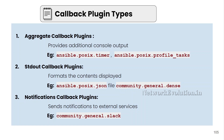Aggregate provides additional console output. If you want to get the total time taken by the playbook in the playbook stats, we can use ansible.posix.timer. And if you want to print the time information of each task or the playbook, we can use profile_task. Stdout formats the content displayed. If you want to convert the entire stdout data into JSON format, we can use ansible.posix.json. And if you want to get minimal information in the stdout, we can use dense.